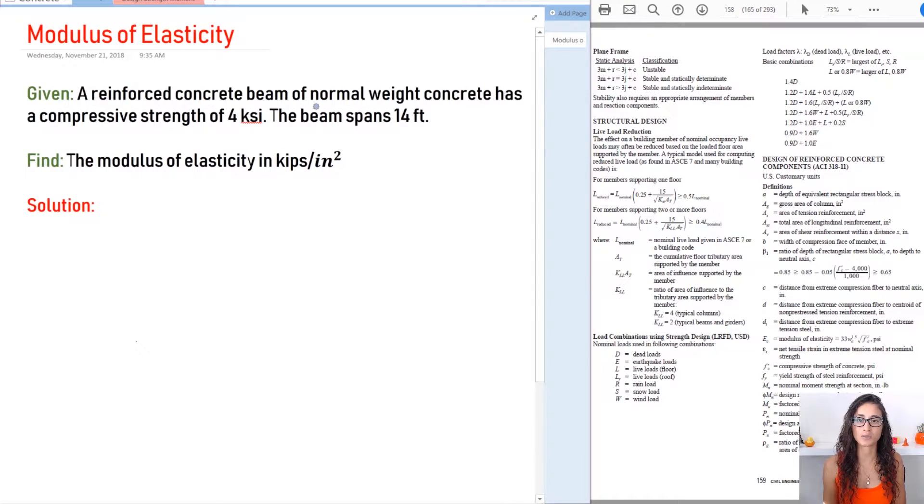We're given a reinforced concrete beam of normal weight concrete with a compressive strength of 4 ksi. The beam spans 14 feet and we need to find the modulus of elasticity in kips per inch squared. Keep in mind that these units are actually the same thing—kips per inch squared and ksi are equal.